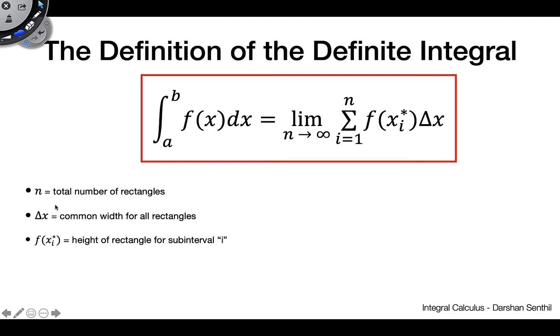And everything still means the same. n is the total number of rectangles, Δx is the common width, f(x_i) is the height of each rectangle.